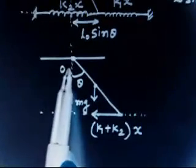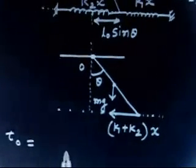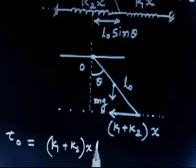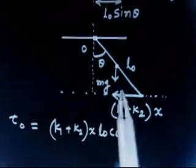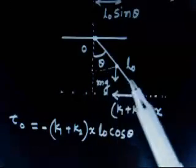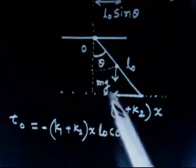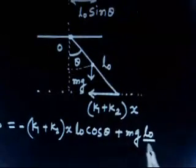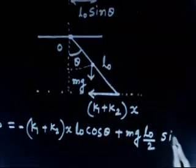Taking the torque about O: the force (K1 + K2)·x acts at distance L₀, and the perpendicular component is L₀ cos θ. So the torque from the spring force is (K1 + K2)·x·L₀ cos θ. This torque decreases θ, so it is negative. For Mg, this distance is L₀/2, so the moment arm is L₀/2 sin θ, giving torque Mg·(L₀/2)·sin θ.